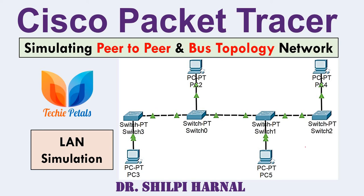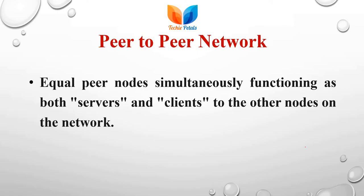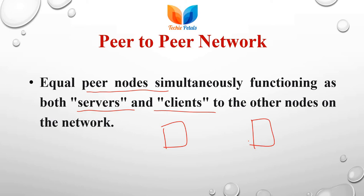Peer-to-peer networking is the type of networking where we are connecting equal nodes and both can function as server and client simultaneously. No node is superior to another — no node has higher or lower priority. Both are at the same level; both peers are connected to each other without any intermediate or centralized node.